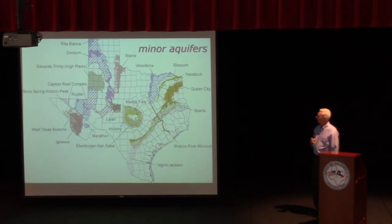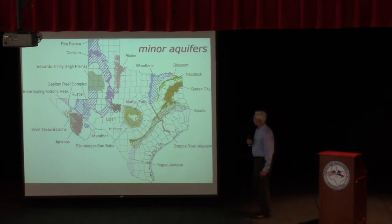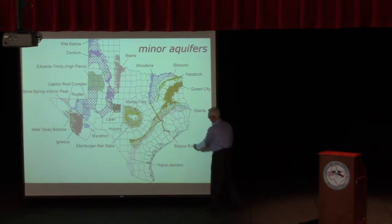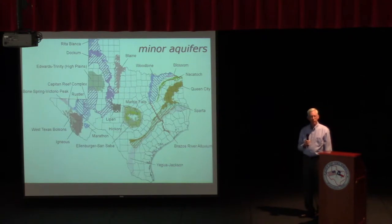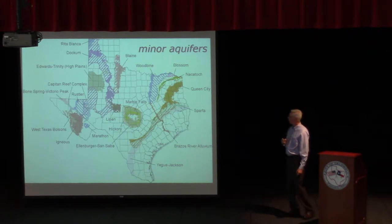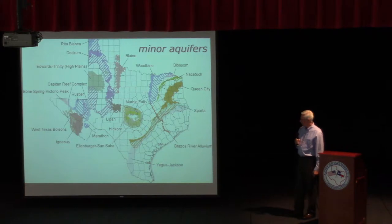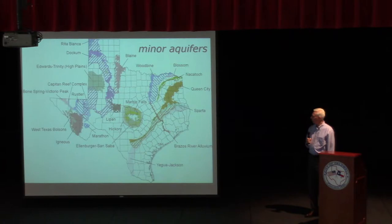We also have minor aquifers — smaller in area or smaller in water volume. The Queen City, Sparta, Yegua-Jackson, and locally, the Brazos River Alluvium. We have developed groundwater availability models on all of these aquifers, except a couple of minor ones still under development — particularly the Marathon aquifers out in West Texas. Over the space of about 15-plus years, either at the board or through contracting with qualified engineering and geologic consulting firms, we have developed groundwater models for just about all of these aquifers, and in some cases we're on the third or fourth generation.